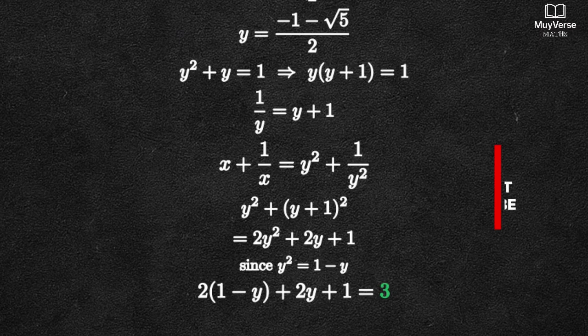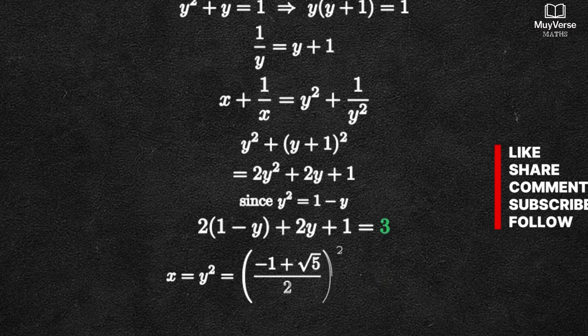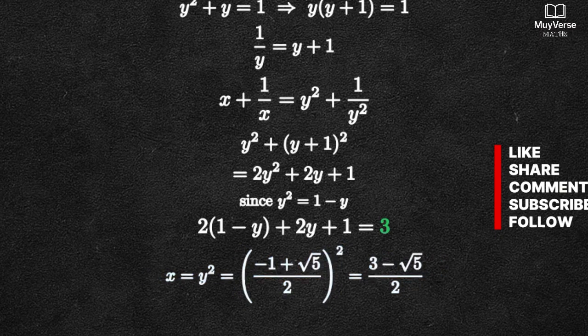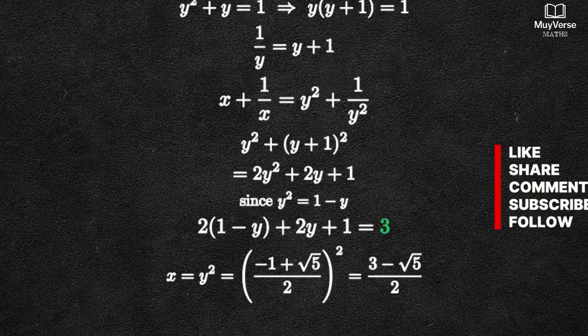Let us verify numerically for completeness. From y equals negative 1 plus square root of 5 all over 2, x equals y squared, which simplifies to 3 minus square root of 5 over 2.